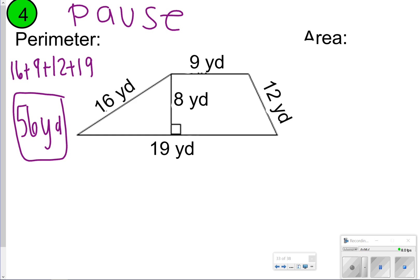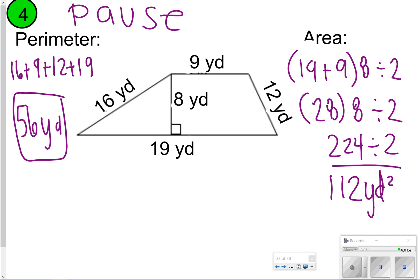For area, I'm going to add my bases: 19 plus 9, times it by my height which is 8, and then divide it by 2. 19 plus 9 is 28. I'm going to take 28 times 8, which is—showing all my work here—that is 224. And then 224 cut in half is 112, and that will be yards squared. How'd you do?